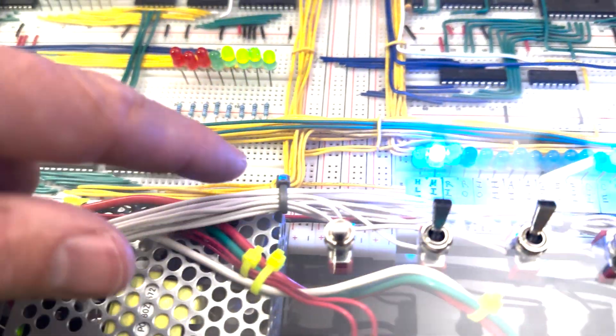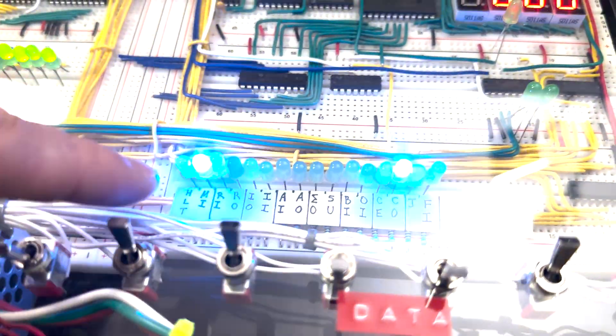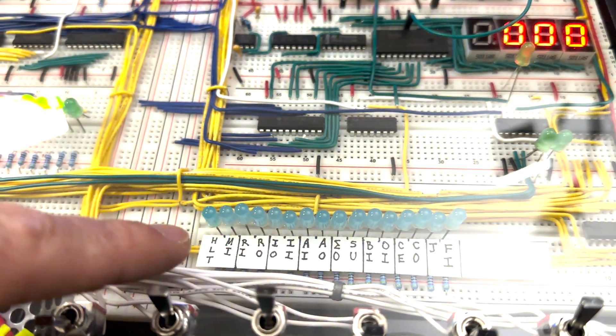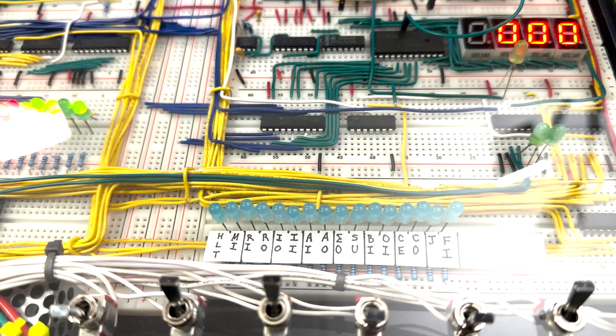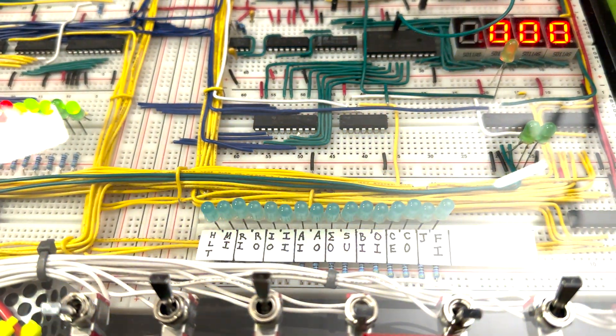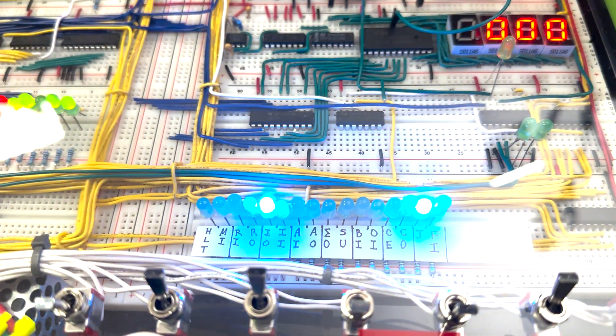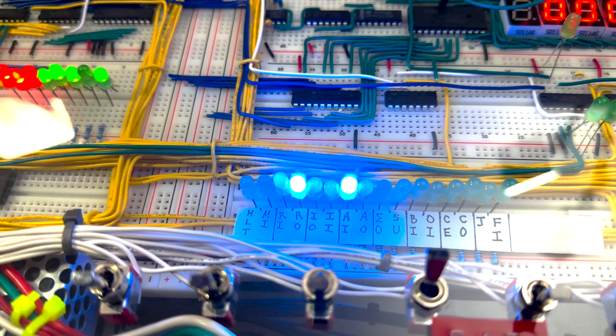We can see which outputs are active based on the inputs, i.e. program counter, by looking at the blue LEDs at the bottom here. The labels under the LEDs indicate which modules are active at the current cycle. For example, the RO LED is on and the AI LED is on, so that means that the next clock cycle, the RAM will output to the bus and register A will read from the bus.